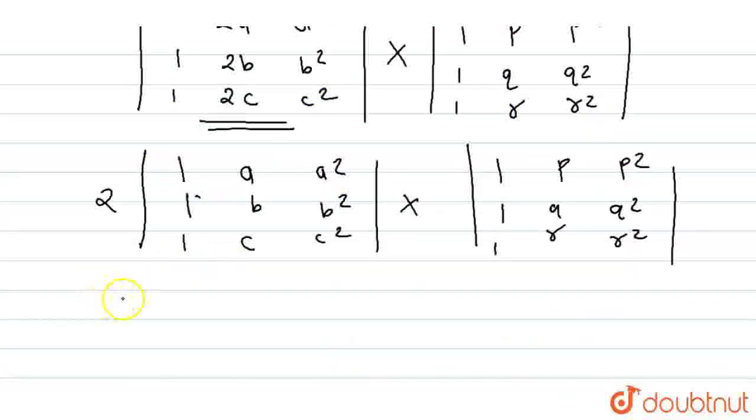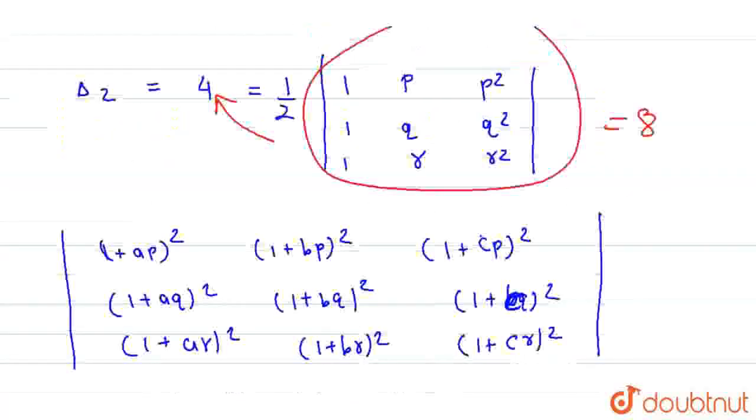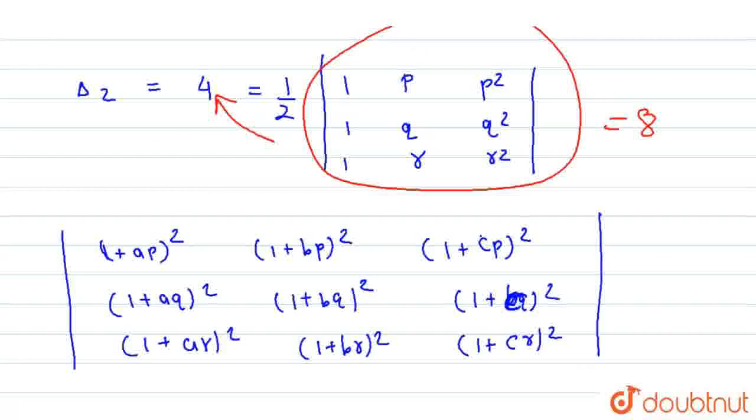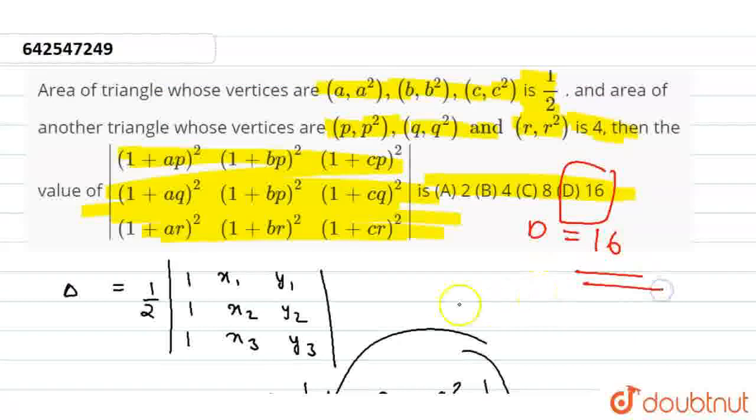Then if we put the value, we have 2 × 1 × 8, which is equal to 2 × 8, which is equal to 16 unit square. So in our given options, we have option D, which is our answer.